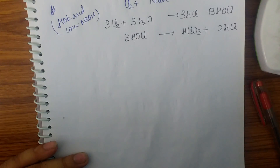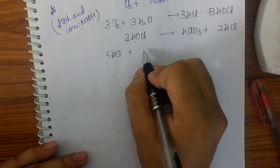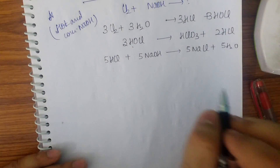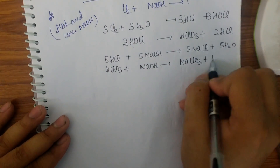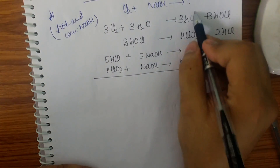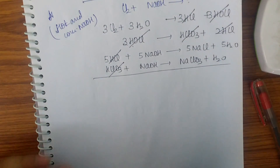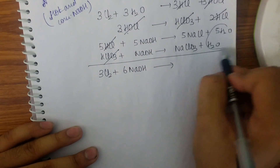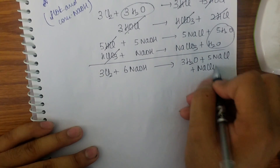HOCl can be broken down into HClO3 and 2HCl. HClO4 is not formed because the highest oxidation state is very difficult to form. So I get 5HCl, which requires 5NaOH to neutralize, giving 5NaCl plus 5H2O. HClO3 reacts with NaOH to give NaClO3 plus H2O. Adding and cancelling all intermediates, the net reaction is: 3Cl2 plus 6NaOH gives 3H2O plus 5NaCl plus NaClO3.